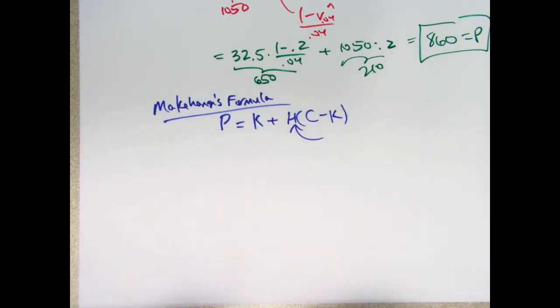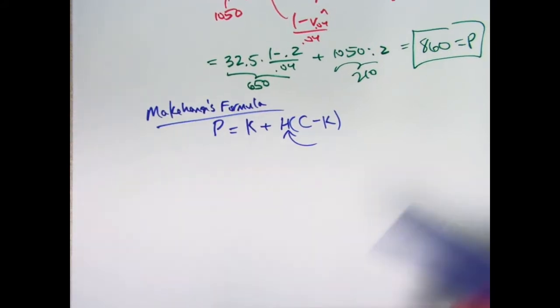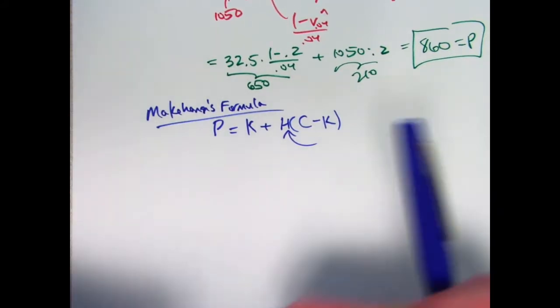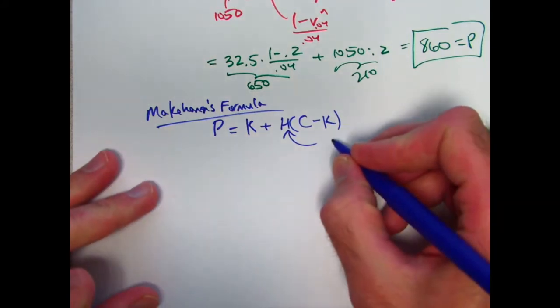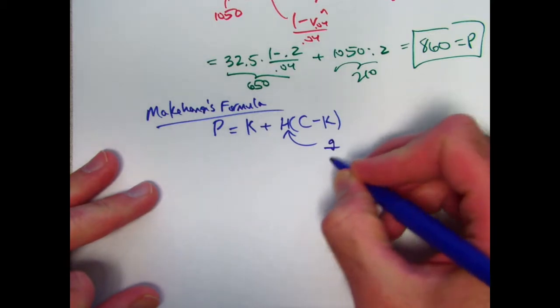H turned out, in the problems we did recently, to be R divided by J, the coupon rate divided by the yield rate, where if it's semi-annual for both, you make sure those match. But in this problem, that only held when C was equal to F, when the redemption amount was equal to the face value. In general, H is G over J.